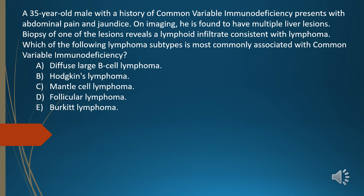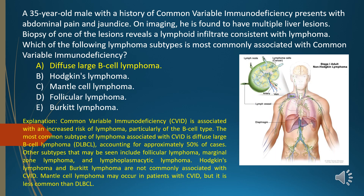A. Diffuse large B-cell lymphoma. B. Hodgkin's lymphoma. C. Mantle cell lymphoma. D. Follicular lymphoma. E. Burkitt's lymphoma. The answer is A, diffuse large B-cell lymphoma.